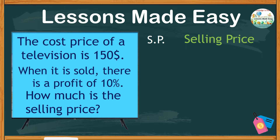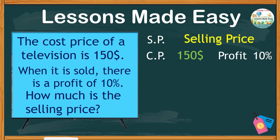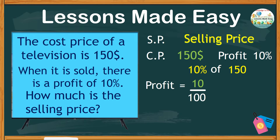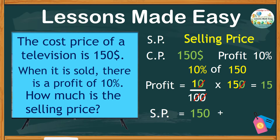Let's try another method for the same problem. The cost price is $150 at 10% profit. We can first find how much is 10% of $150. Since percent is over 100, 10% is expressed as 10 over 100, and the word 'of' means multiply by 150. We cancel the zeros, giving us 1 times 15, which is $15. To find the selling price, we simply add the cost price of $150 plus the 10% profit of $15, giving us the same answer of $165. You can use whichever method is easier for you.